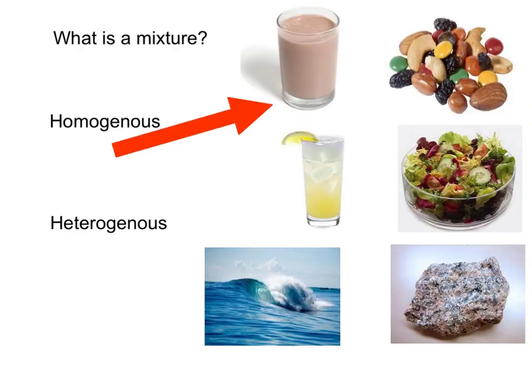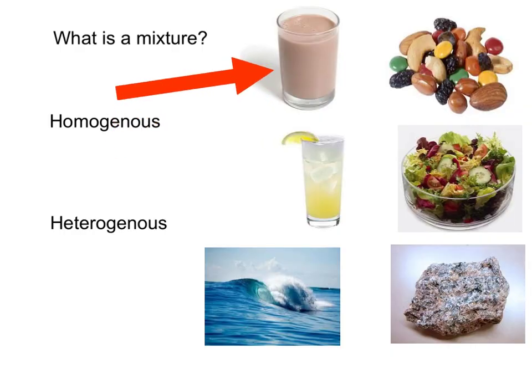We're going to take a look at chocolate milk first. Chocolate milk is an example of a homogenous mixture. Homogenous means the same throughout. If you were to allow the chocolate milk to evaporate, you would find chocolate and sugars at the bottom of the glass. But when you drink chocolate milk, it feels like and tastes like the flavor is evenly distributed throughout — because in a homogenous mixture, all the particles are evenly distributed.